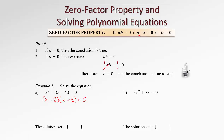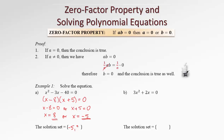Now we use the zero-factor property, stating that either x minus 8 equals zero or x plus 5 equals zero. We've ended up with linear equations, which we know how to solve. We bring the 8 to the other side and get x equals 8, or x equals negative 5. Therefore, the solution set consists of 8 and negative 5.